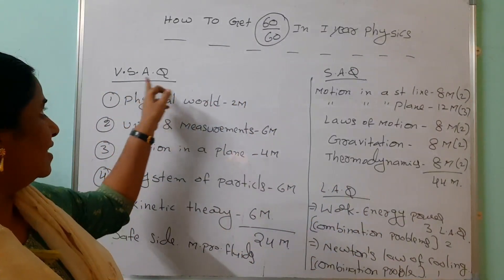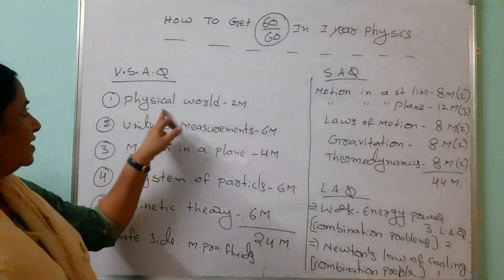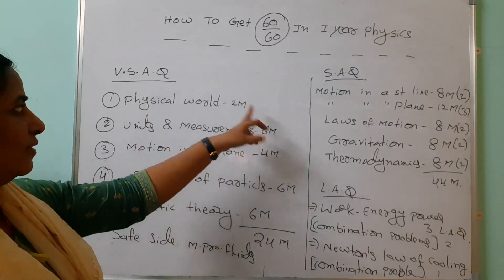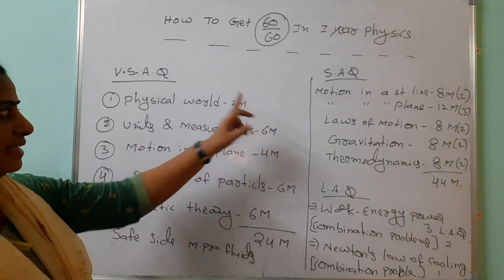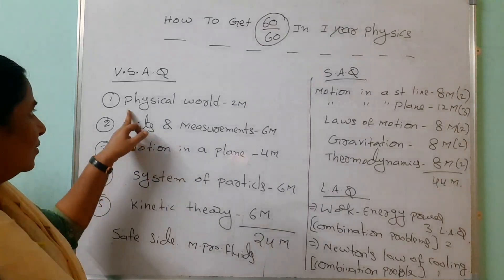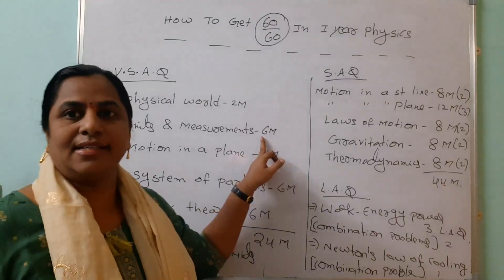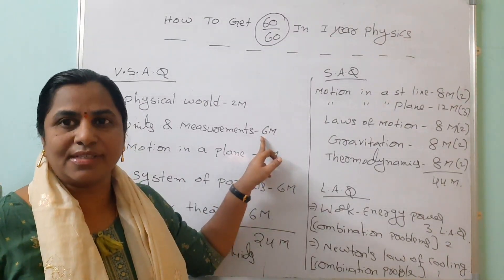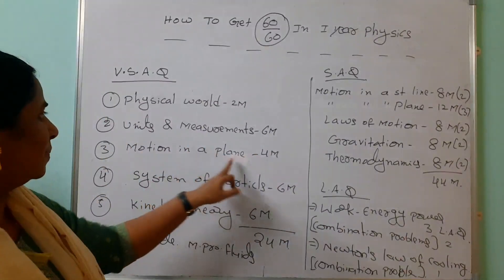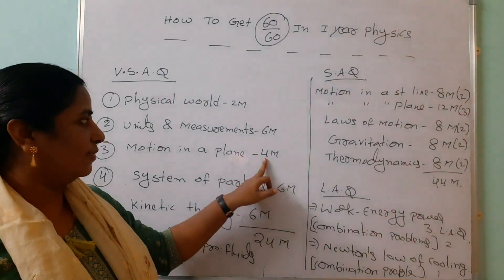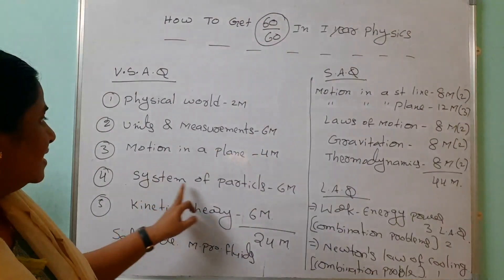VSAQ: twice from physical world - it's a very small chapter, 5 VSAQs are there. You will get easily two marks. You should read that chapter, don't leave that one. Then units and measurements - they are giving three VSAQs, so six marks. Then motion in a plane - they are giving two VSAQs, four marks you are getting.